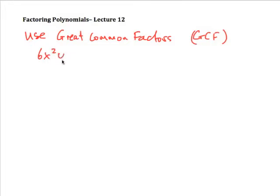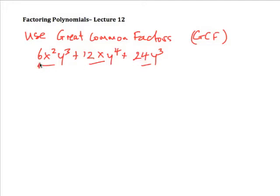For example, let's suppose we have 6x²y³ + 12xy⁴ + 24y³. We go through each term and find the greatest common factor. Notice there's a 6 in 12 (2×6) and a 6 in 24 (6×4). There's no 12 in 6 since it's smaller, and no 24, so 6 is the greatest common factor as far as numbers are concerned.